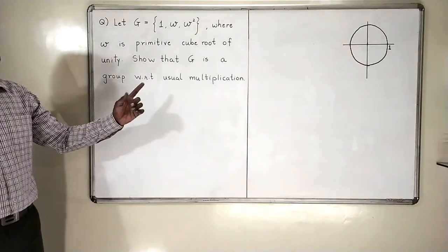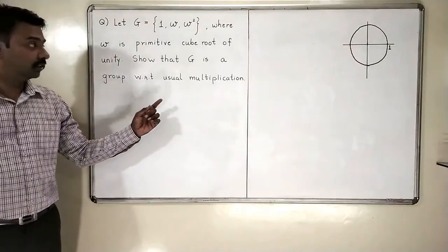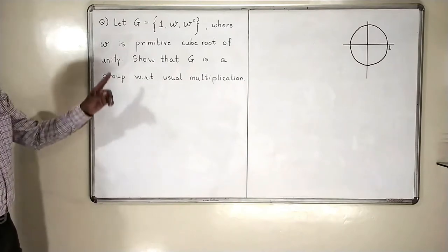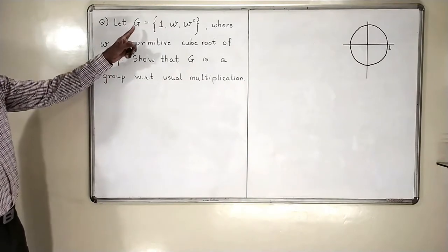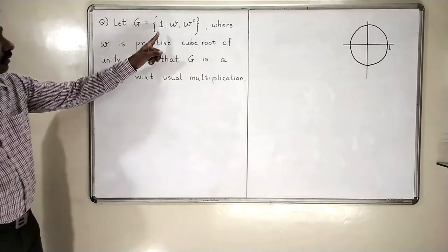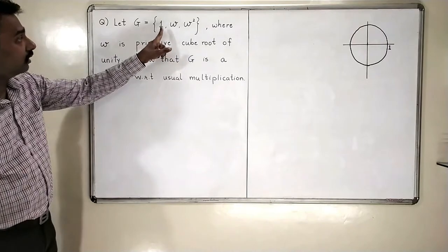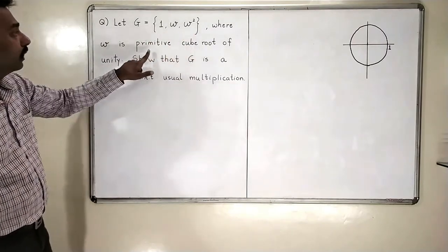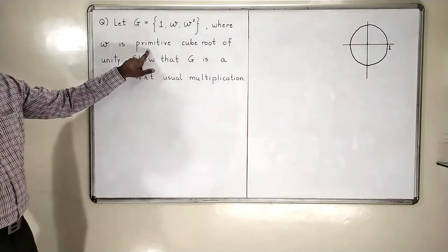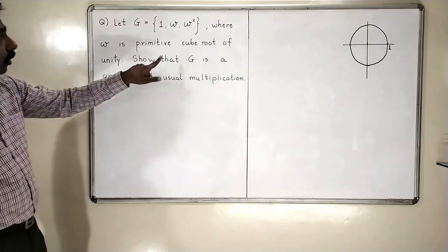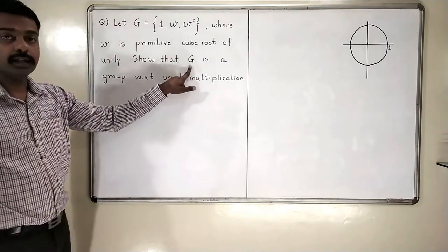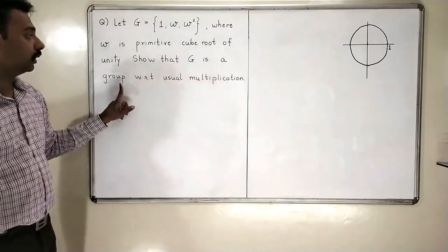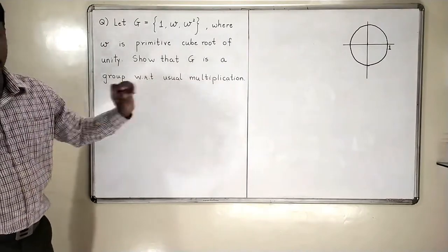Let us start with the third problem. G is a group — G is a set with three elements: 1, omega, and omega square, where omega is a primitive cube root of unity. We want to show that G is a group with respect to usual multiplication.